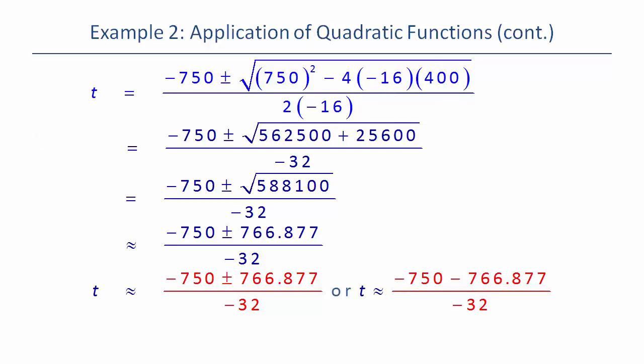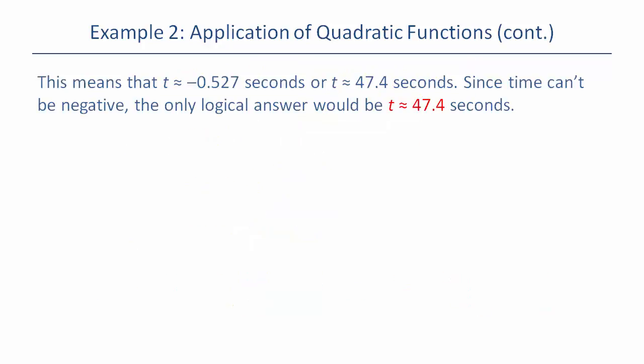By using the quadratic formula, because this thing is not going to factor nicely for most numbers. So you put everything into the quadratic formula, you get your plus and minus pieces, and you know you could actually work those out and get your decimals. And see that t could either be -0.527 seconds or about 47.4 seconds. Since it's impossible to be negative, and why can't it be negative? Well because you can't have negative time. That'd be like going backwards in time. Then the only logical answer would be a little bit more than 47 seconds.